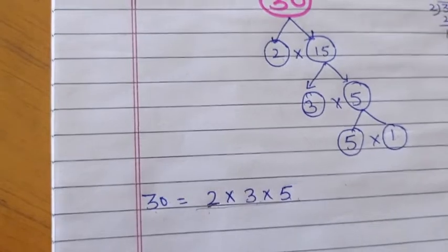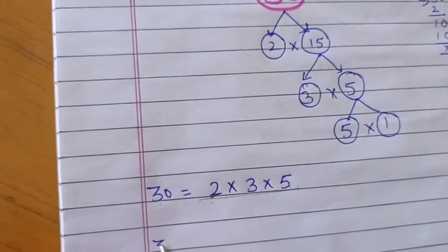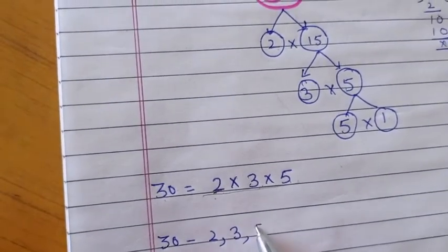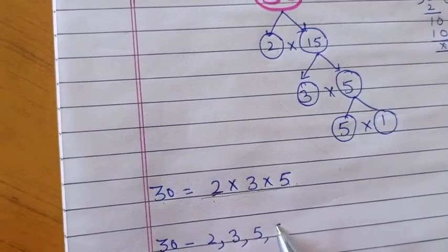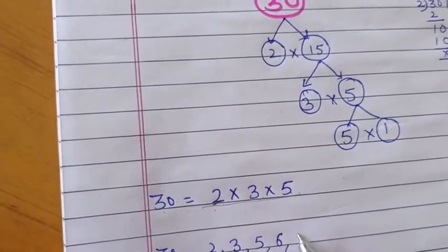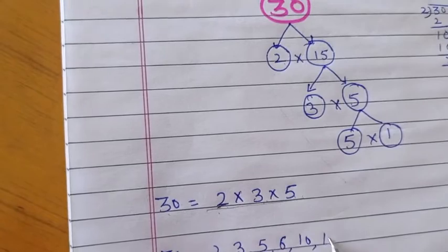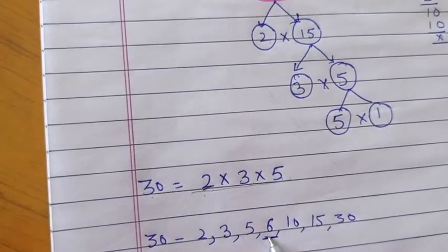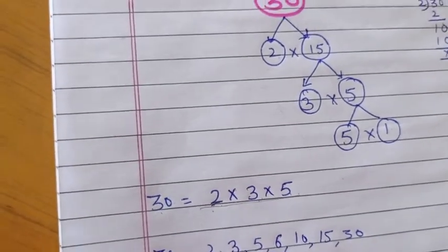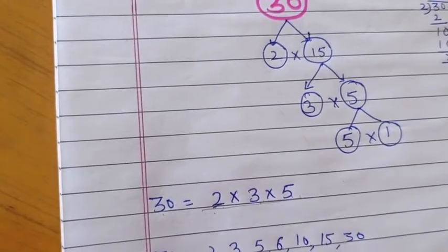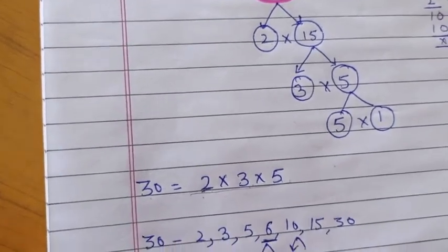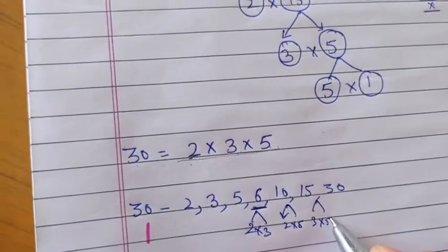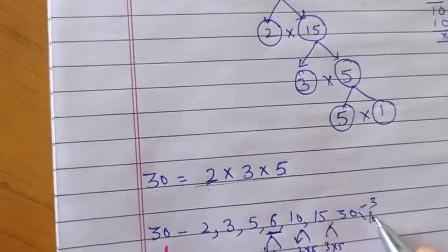For example, 30 factors. We know that what are the factors of 30. 2, 3, and 5, 6. 6 is also a factor. And then 10, and 15, and then 30. But what is it? We can split them. 6 we can write as 2 multiply 3. We can write 10 as 2 × 5. And 15 we can write as 3 × 5. In this way we can split them.